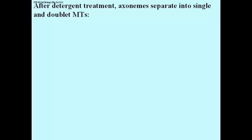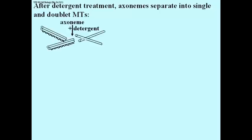You can use different detergents and chemical treatments to remove components of the axoneme. This will actually separate the microtubules in the axoneme into single and double microtubules. With an appropriate detergent applied to the axoneme and broken apart, you can see the single microtubule derived from the middle component of the axoneme, and you see the doublets.